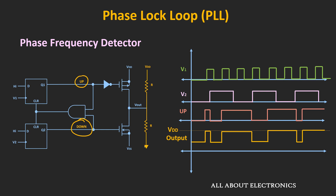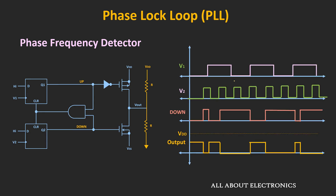When the up output is high, the overall output voltage is pulled up from Vdd/2 toward Vdd. Taking the average of the output voltage gives a value greater than Vdd/2, meaning the VCO frequency will increase until it matches the input frequency. Similarly, when the input frequency is less than the oscillator frequency, V2 leads V1 so the down output becomes high, pulling the output down to 0V from Vdd/2. The average of the output will then be less than Vdd/2, reducing the VCO control voltage and bringing down the VCO frequency. This is the basic working principle of the phase frequency detector.